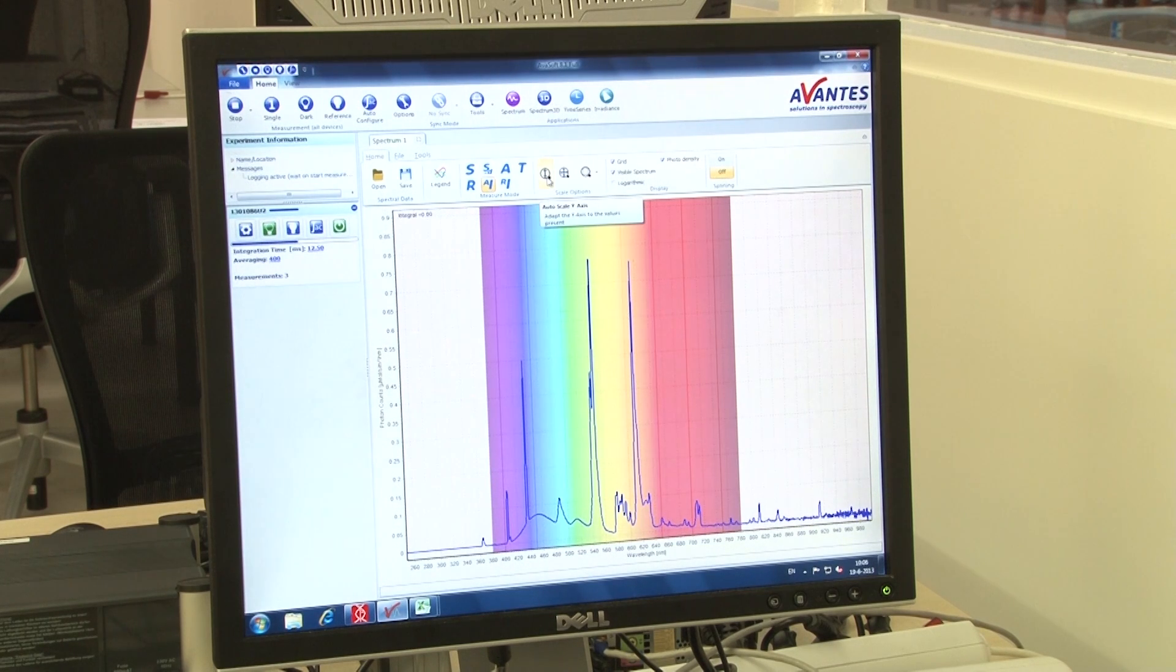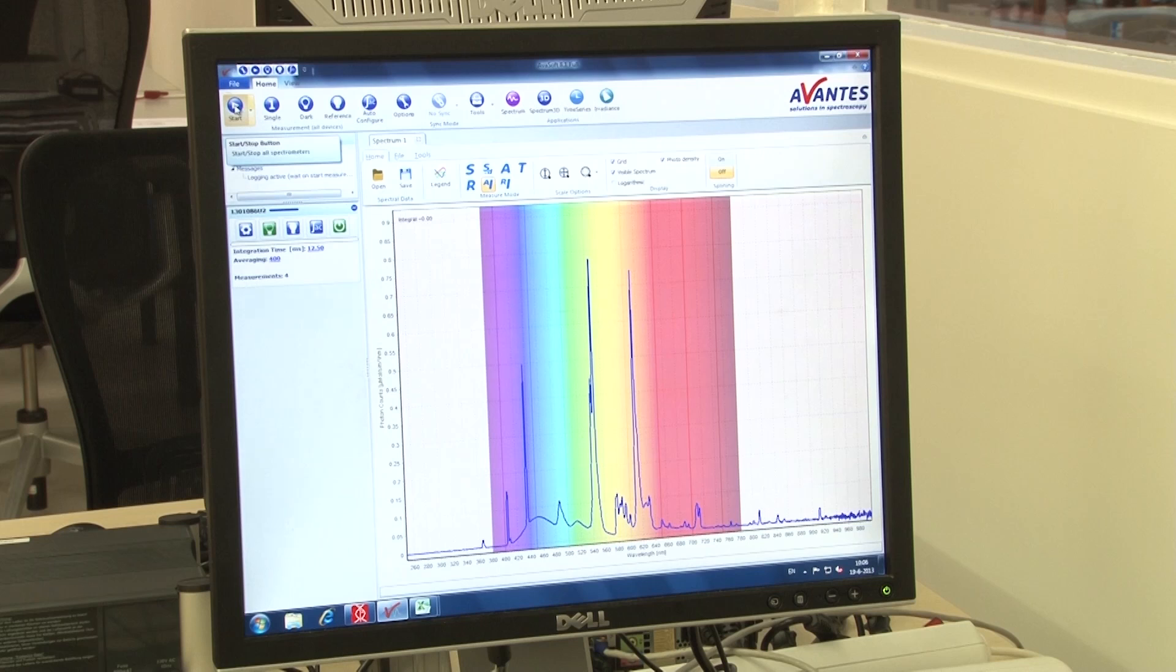We see the spectrum of the compact fluorescent lamp. As you can see its emission has some sharp lines related to the excited states of the mix of phosphorus present in the bulb.